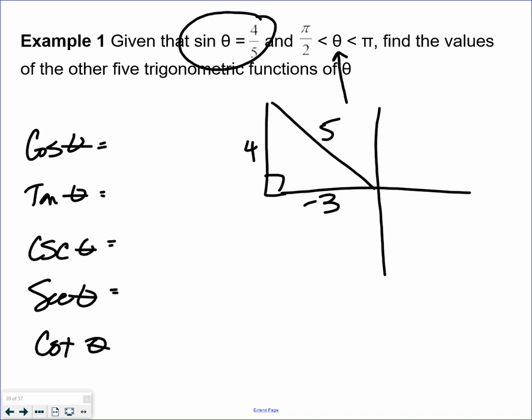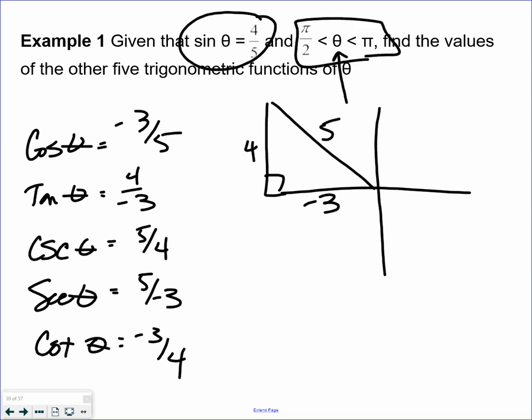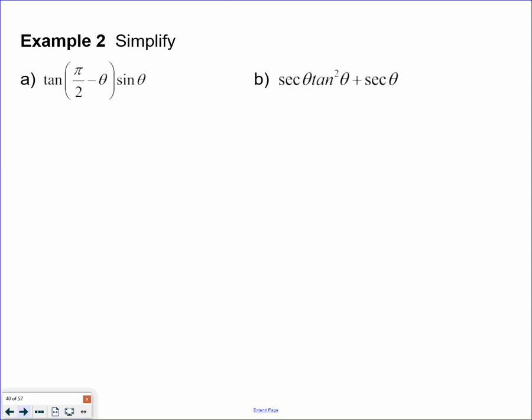Cosine is adjacent over hypotenuse. Tangent is opposite over adjacent. Cosecant is hypotenuse over opposite. Secant is hypotenuse over adjacent. Cotangent is adjacent over opposite. The only thing new about this question is they don't tell you the quadrant—they give you an interval, which is the same as telling you a quadrant.